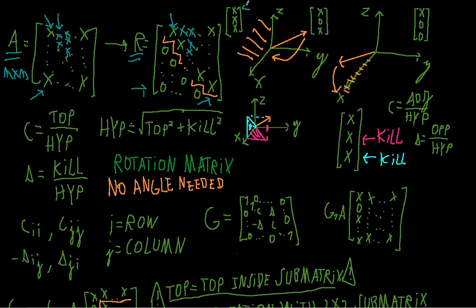Basically, if you want to kill the y and z components of a three-dimensional vector, first we rotate such that the y component becomes zero, and then we rotate in such a way that the z component becomes zero. So I have my vector in three dimensions. First, I rotate it such that it now lies in the x-z plane — the y component is zero — and then I rotate a second time so that the vector now lies entirely on the x-axis, so both the y and z components are zero.